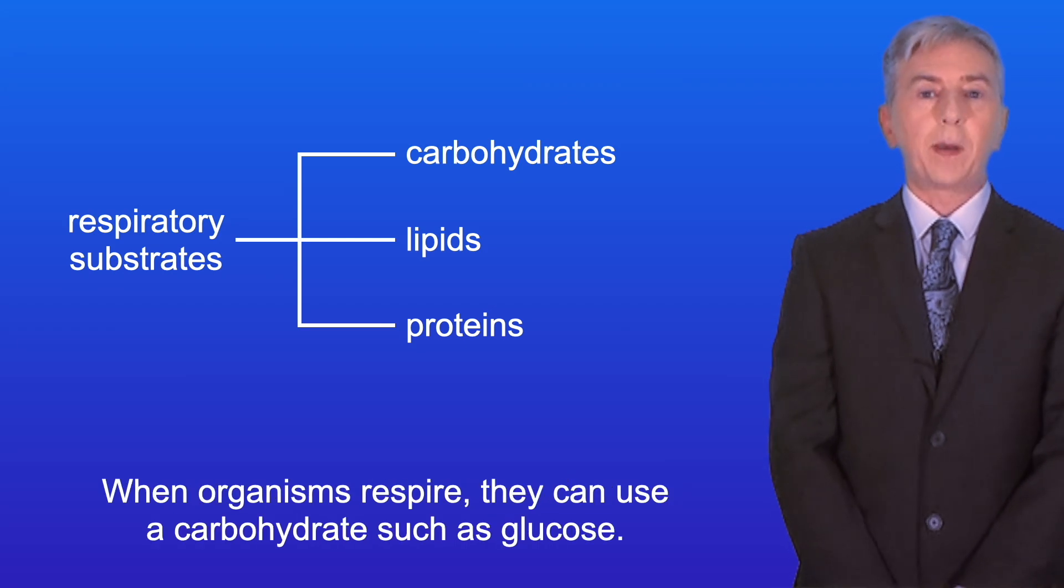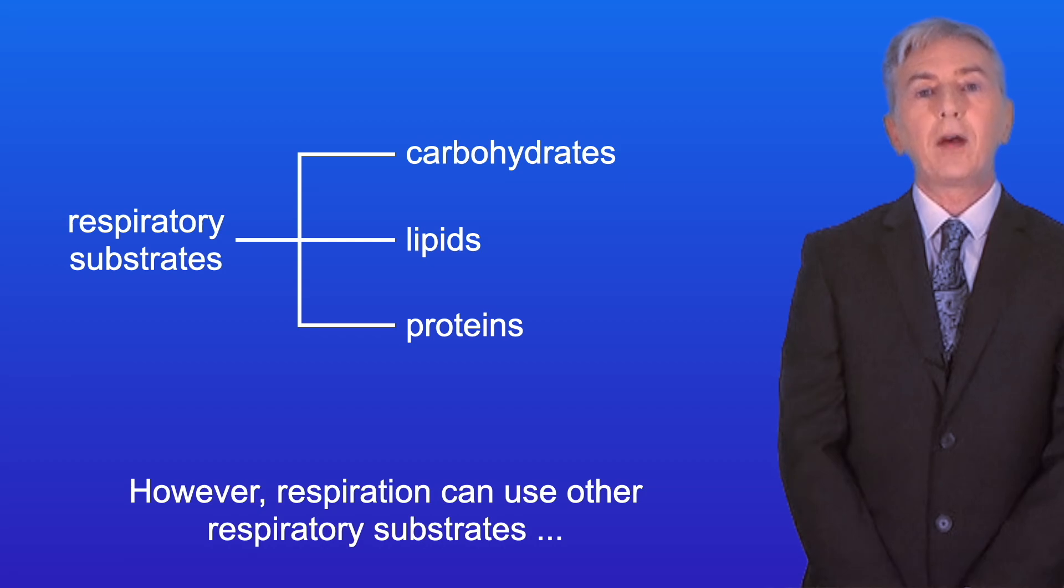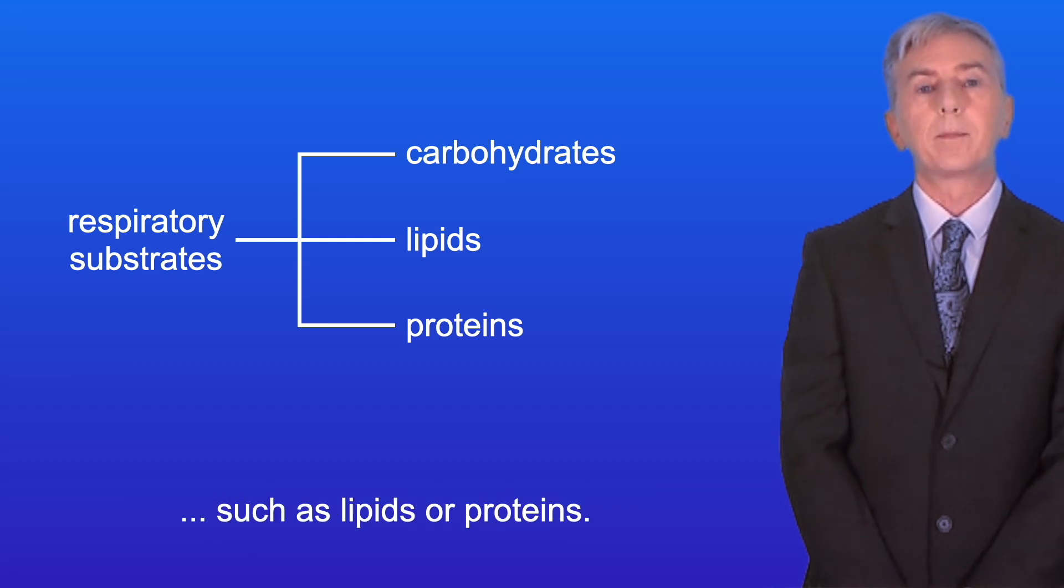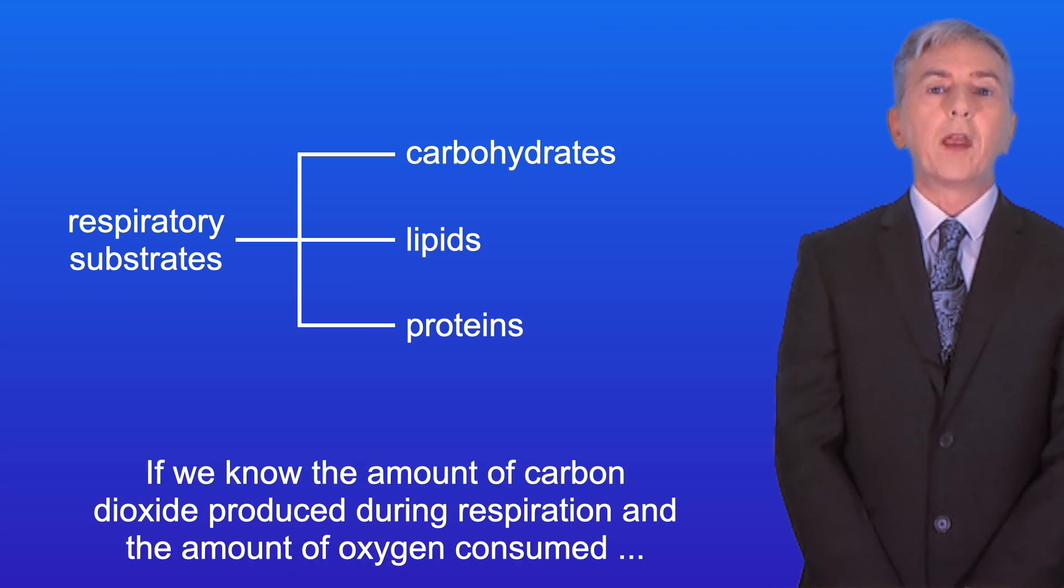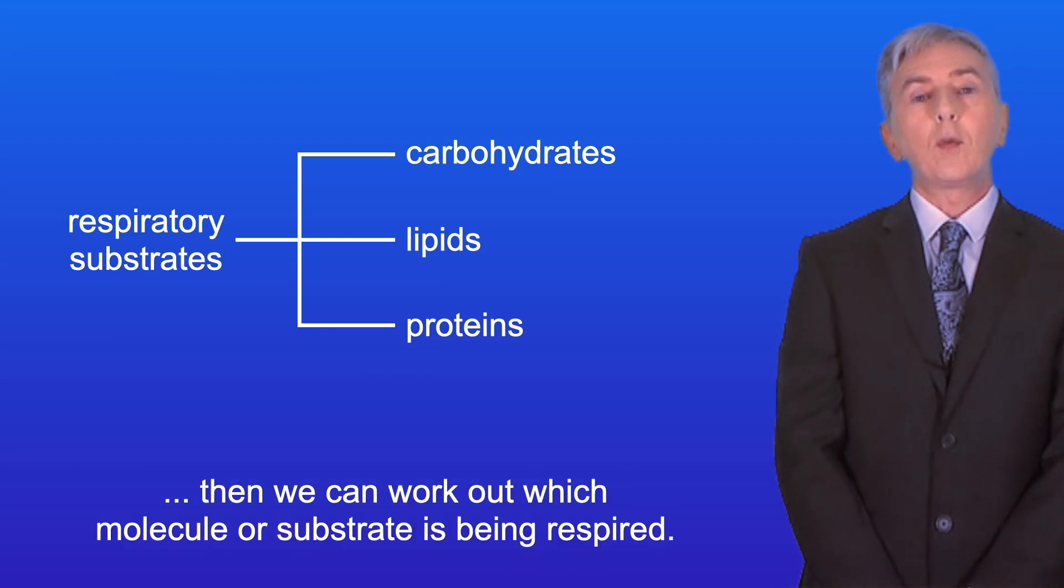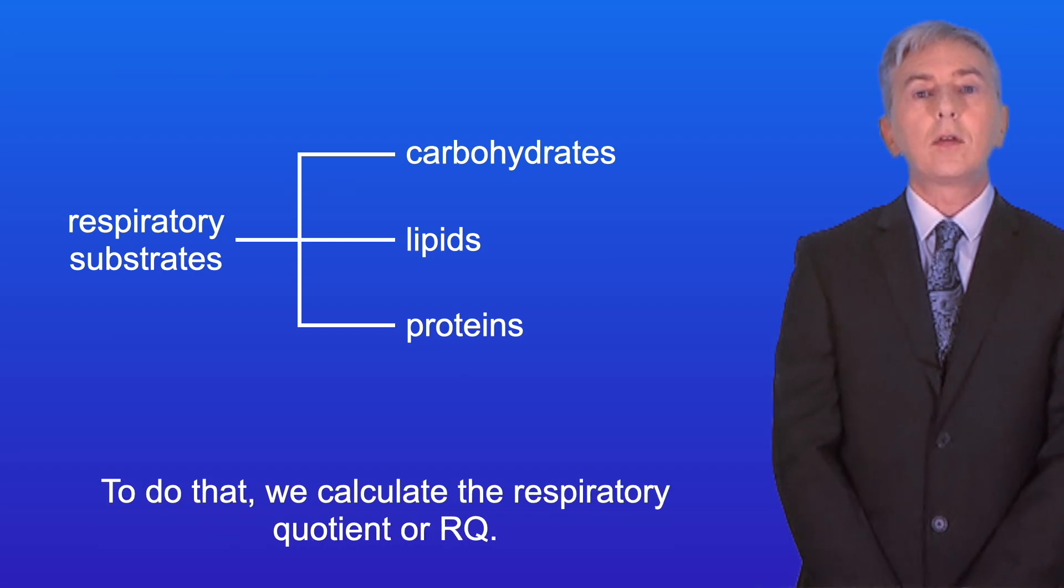When organisms respire they can use a carbohydrate such as glucose. However, respiration can use other respiratory substrates such as lipids or proteins. If we know the amount of carbon dioxide produced during respiration and the amount of oxygen consumed, then we can work out which molecule or substrate is being respired. To do that we calculate the respiratory quotient or RQ.